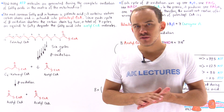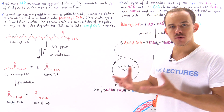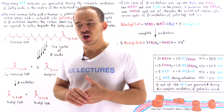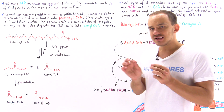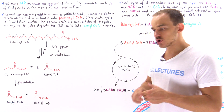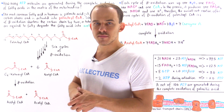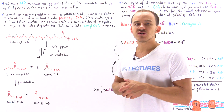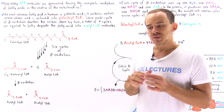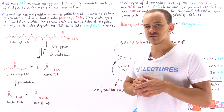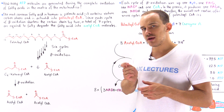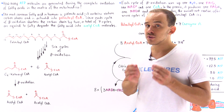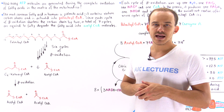Our cells can break down fatty acids to form ATP molecules through a process known as beta oxidation. Within the matrix of our mitochondria, activated fatty acid molecules are completely oxidized to form acetyl coenzyme A molecules, which can then be used to generate high energy ATP molecules. The question for this lecture is: how many ATP molecules can cells generate when they completely oxidize and break down fatty acids?